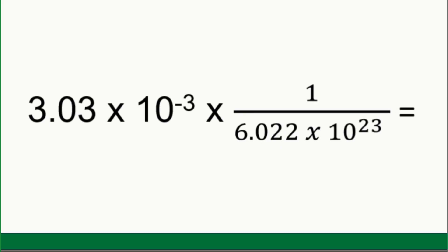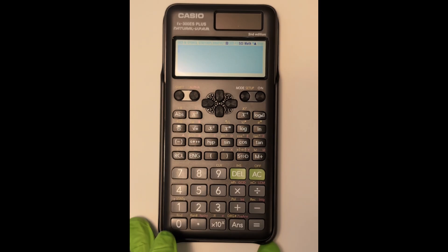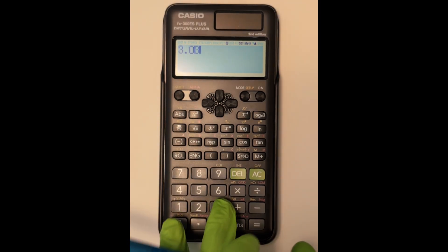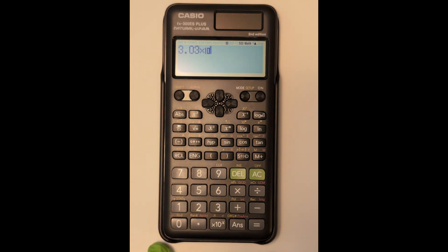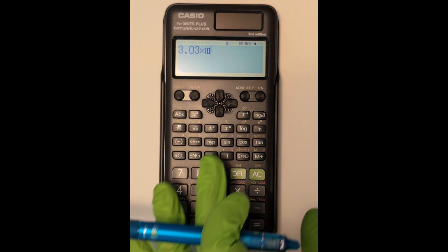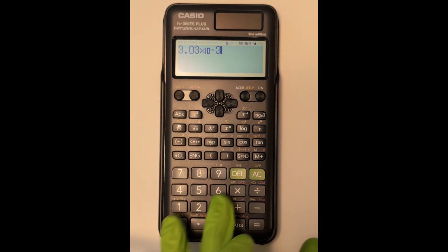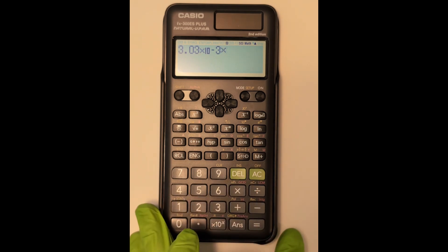Now here's another example. So pause and write this number down. We're going to enter in the 303. We're going to use that times 10 with the exponent button already built in, so we can just hit that negative 2 or negative 3 times a new fraction,